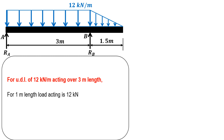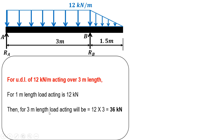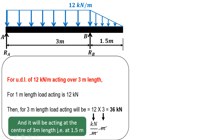For 1 meter length the load acting is 12 kilonewton, so for 3 meters the load is 12 multiplied by 3, that is 36 kilonewton. It acts at the center of the 3 meter length. Since this is a rectangular distribution, the centroid is at 3/2, that is 1.5 meters. So we convert this UDL into a point load of 36 kilonewton acting at a distance of 1.5 meters.